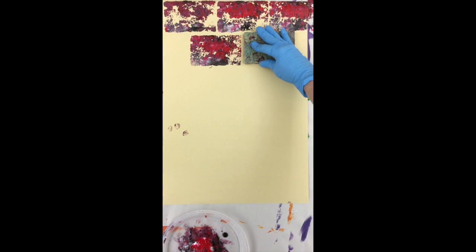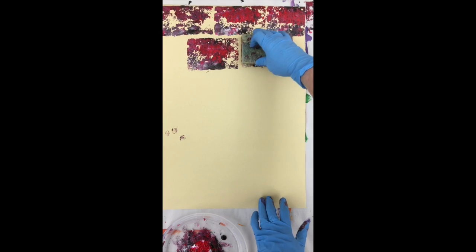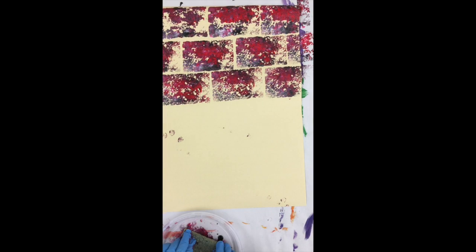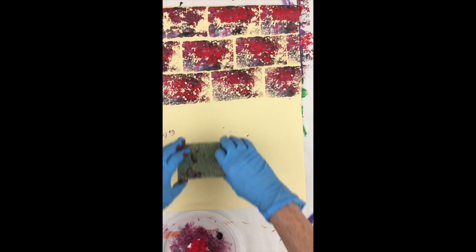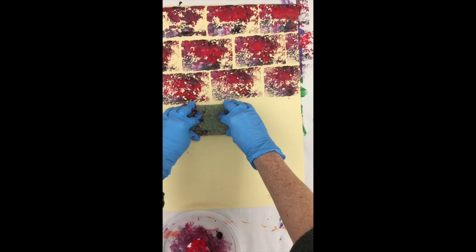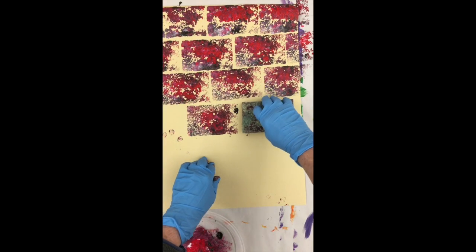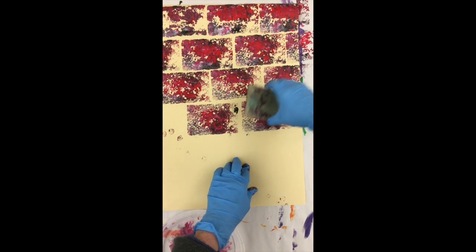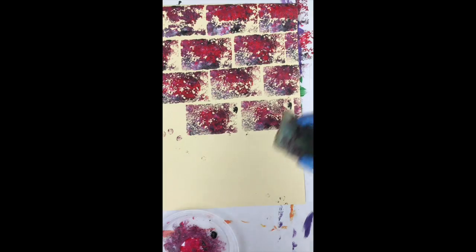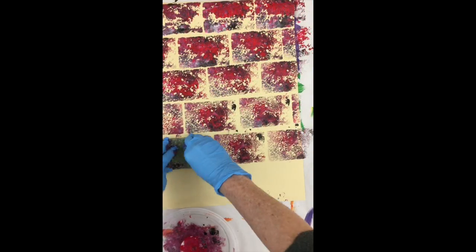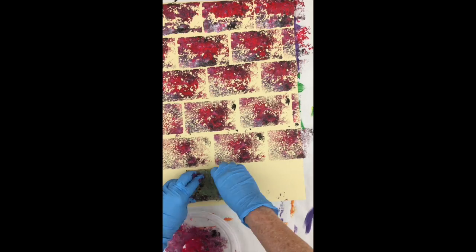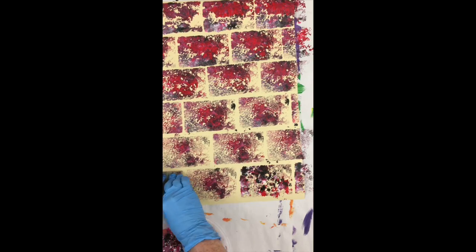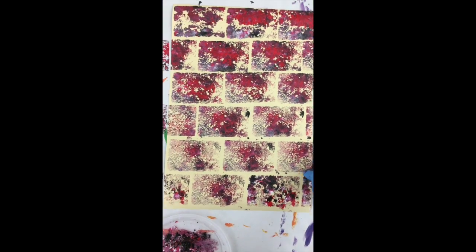This is how it works. This is printmaking. I've got paint on a sponge and I am pressing down these bricks on this piece of paper. And I've done a lot of the bricks for you. But I want you to help me do the last few bricks on the paper. And there. My brick wall is done.